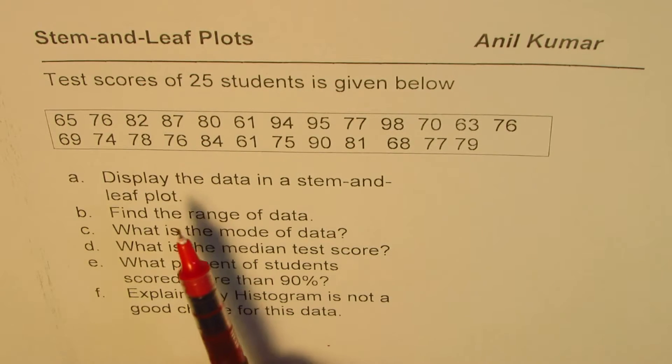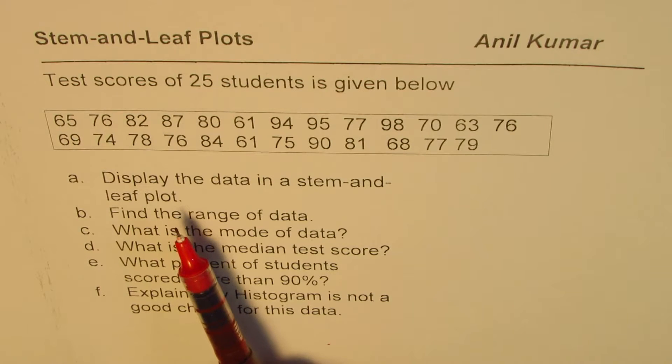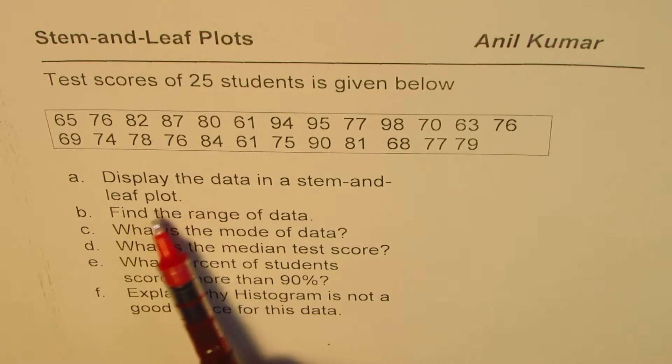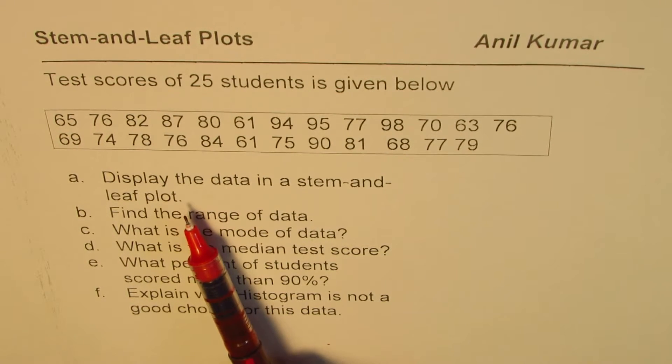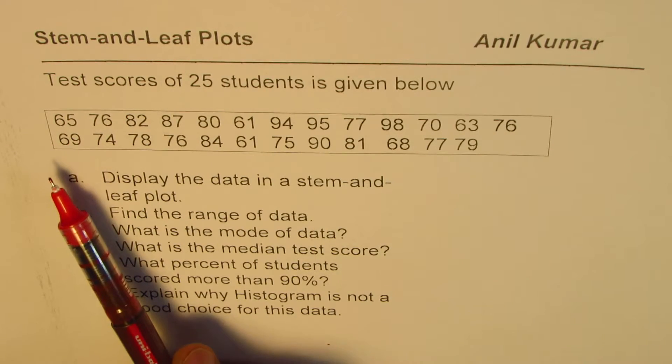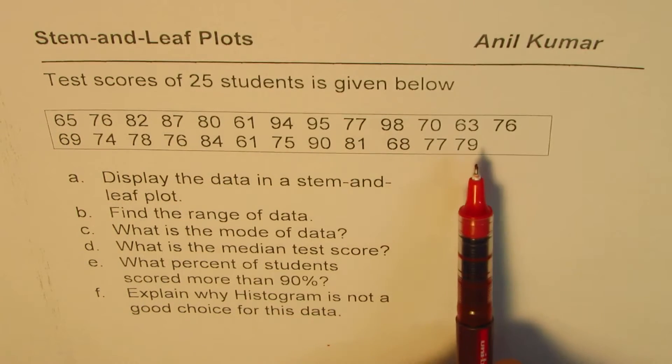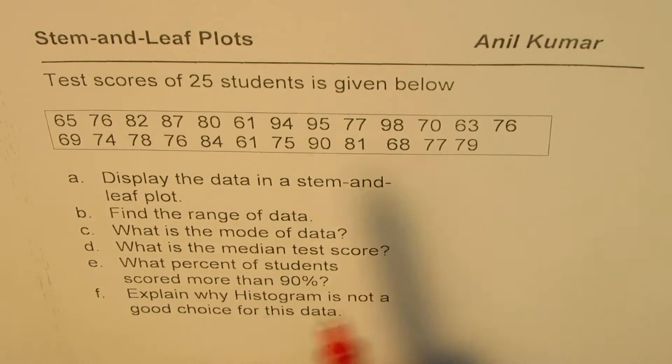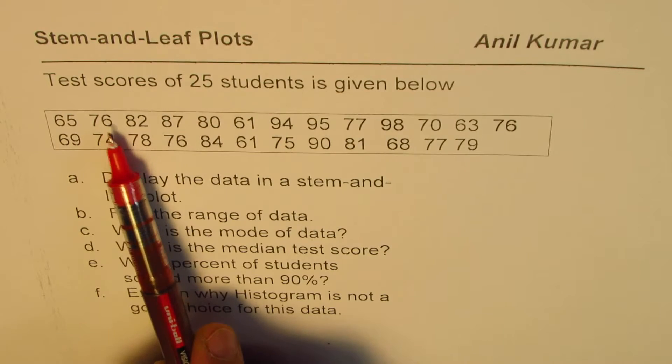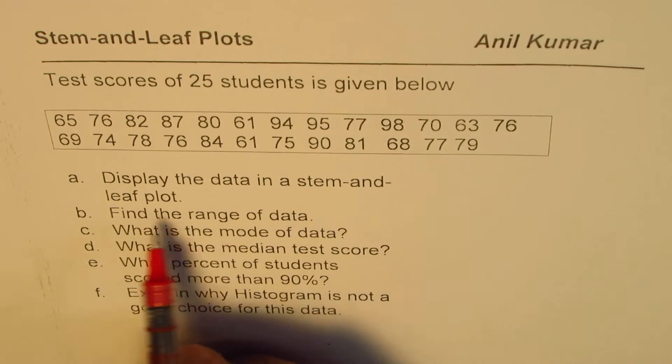So let's begin by creating a stem-and-leaf plot. Now before getting in there, what we need to do is understand the data itself, that is the test scores. You will find that all the test scores are in two digits, that is 65, 76, something like this, ones and tens place.